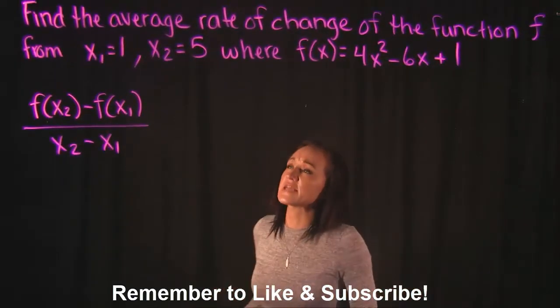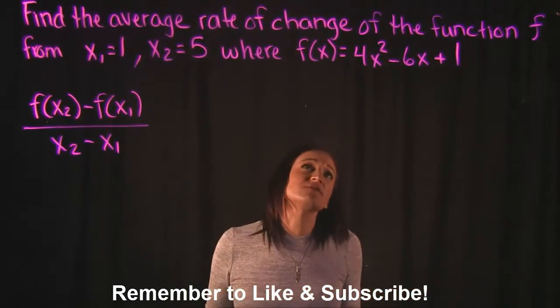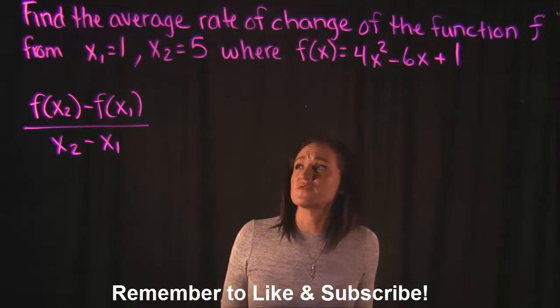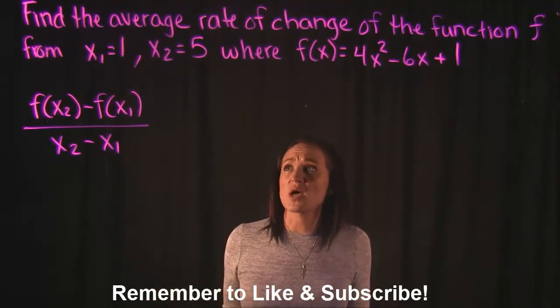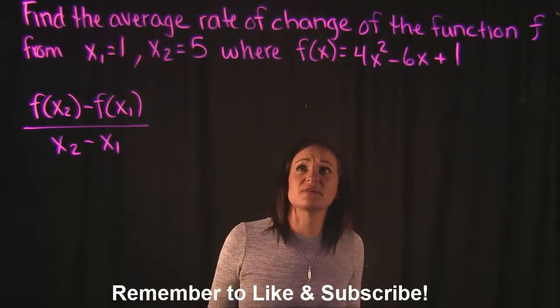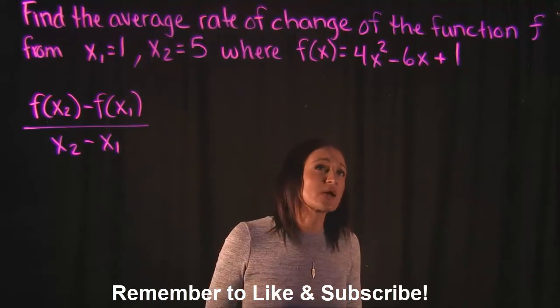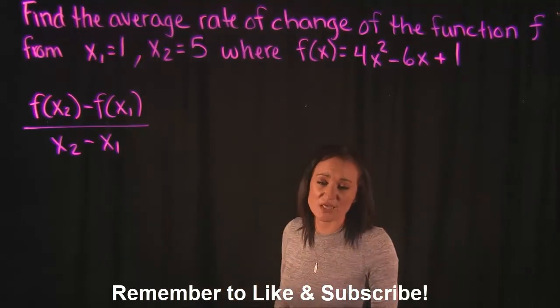So for this video, the instructions say find the average rate of change of the function f from x1 equals 1, x2 equals 5, where f(x) equals 4x squared minus 6x plus 1.